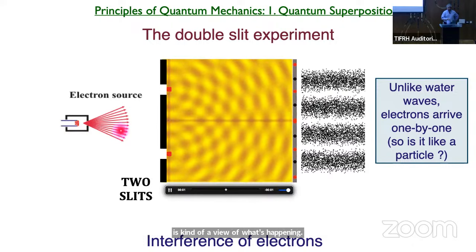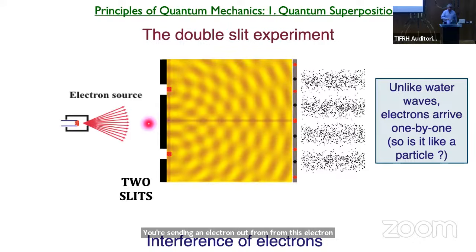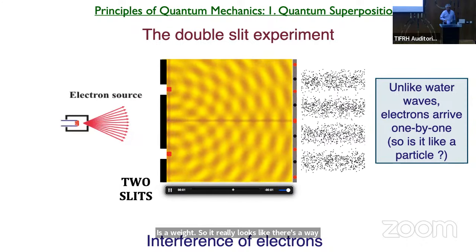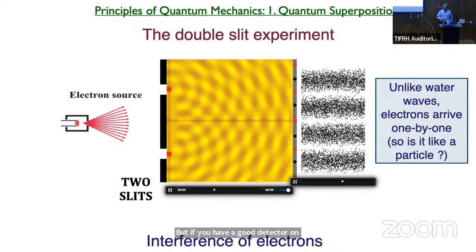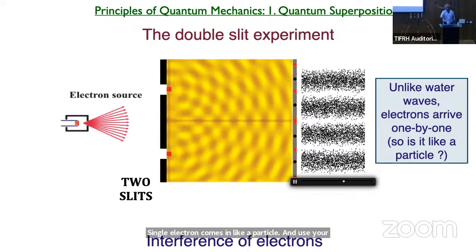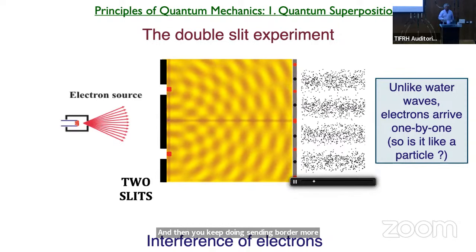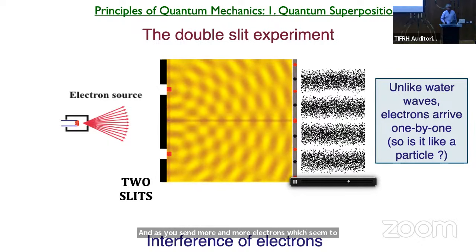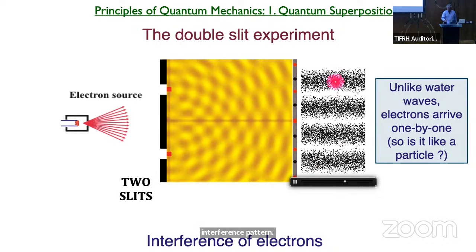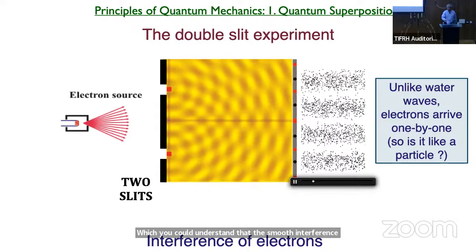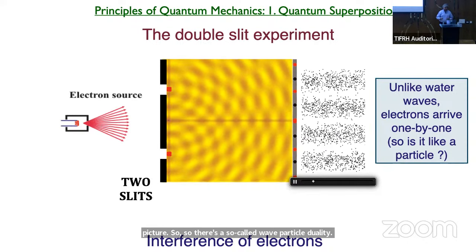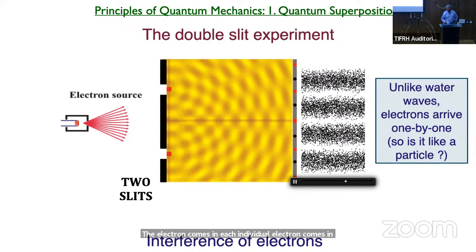In the double-slit experiment, you send an electron out from an electron source. Quantum mechanics tells us each electron is a wave, so it really looks like a wave going through two slits. But if you have a detector on the screen, a single electron comes in like a particle — it gives you a blip at one point. You keep sending more and more electrons, each detected as a particle, but only after you have seen a lot of them do you get an interference pattern, which you can understand perfectly by the wave picture.